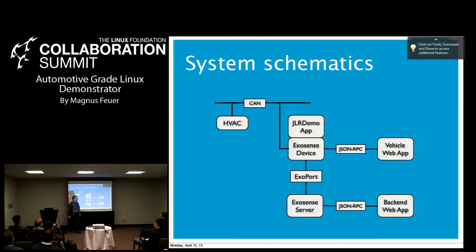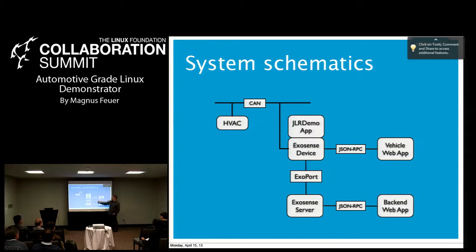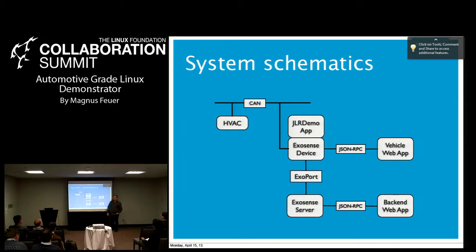One use case is that inside the vehicle, the web app developed by Timo and Symbio — you set the fan speed, for example. We send a JSON-RPC command over HTTP to our ExoSense device running inside the vehicle, which basically forwards it to a demo app. This is a couple of hundred lines of code — very small and compact. The demo app emits a CAN message to the HVAC system to set the fan speed. It also forwards the command to the ExoSense server, which forwards it to the backend web app to update the interface running on your iPad or laptop.